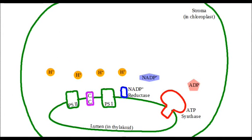Hey everybody, welcome to our second episode of Maccademy and today we're going to be having a look at photosynthesis. Now we know photosynthesis is broken down into two phases: the light dependent reactions, which require light to occur, and the light independent reactions, which can take place without light.